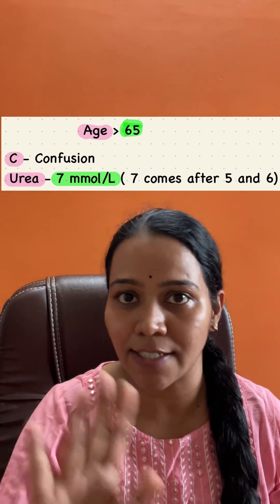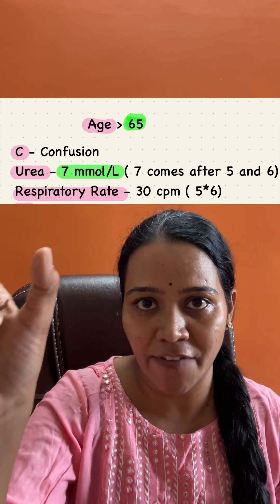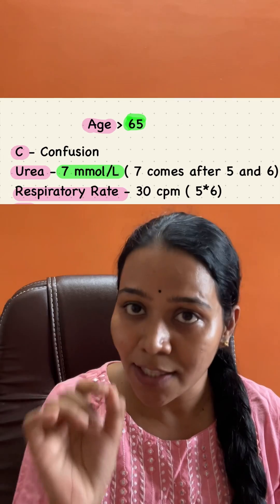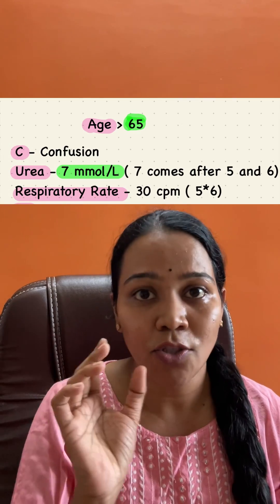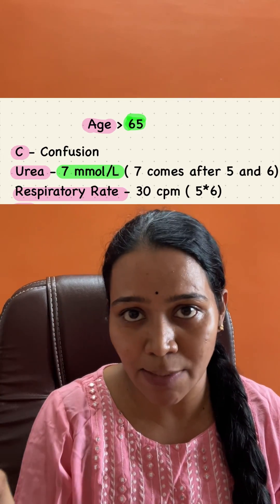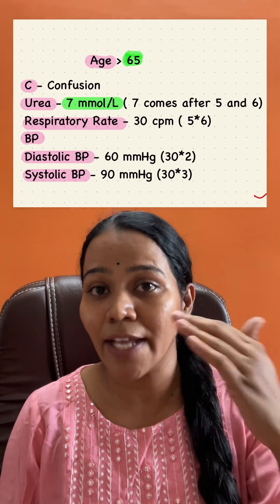Next, for Respiratory Rate, take the same 65 — 6 times 5 is 30. So Respiratory Rate is more than 30 cycles per minute.